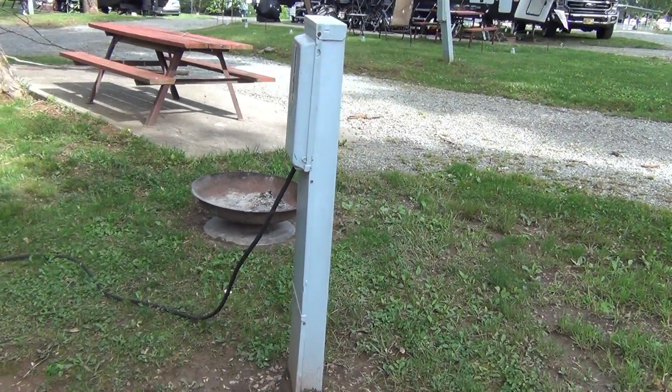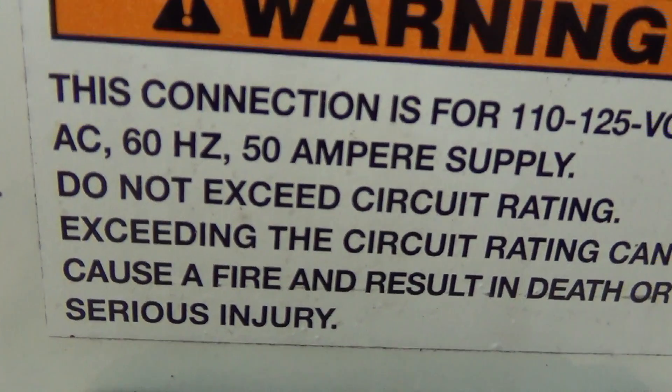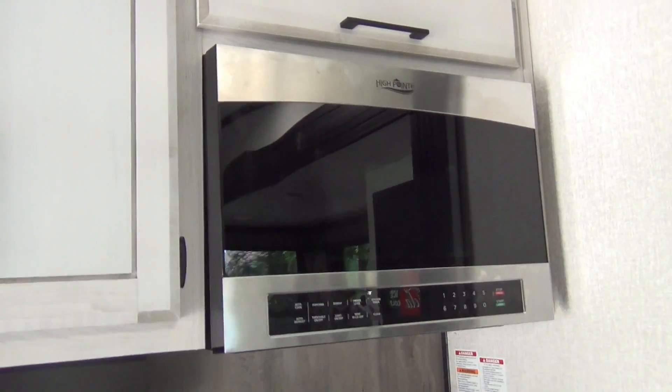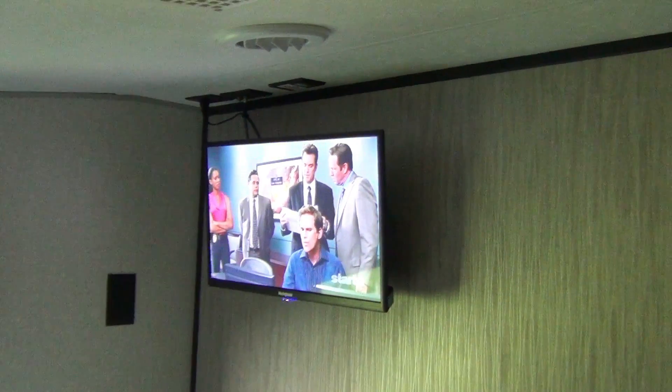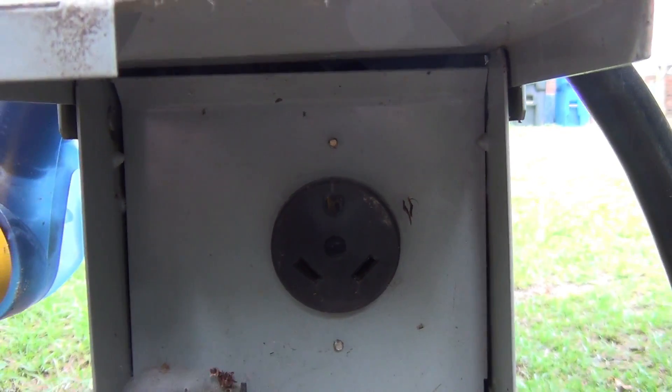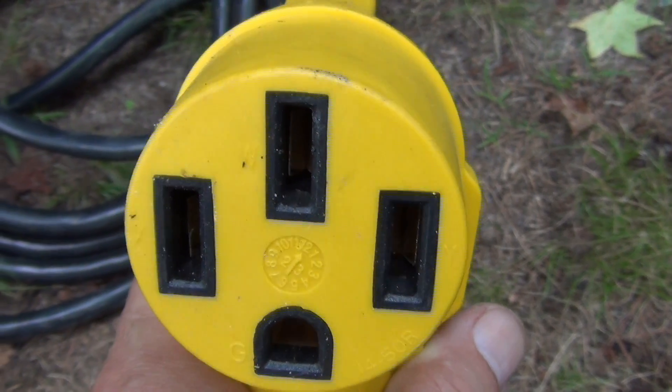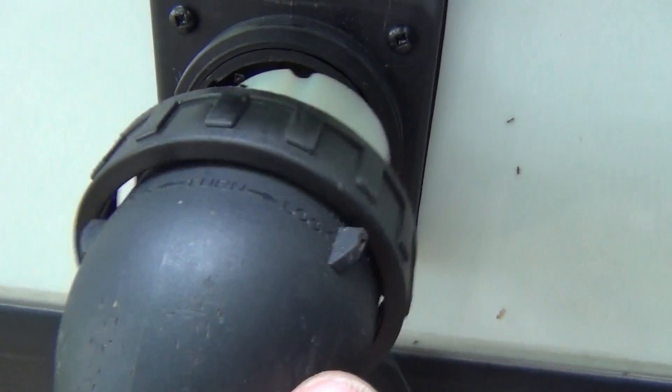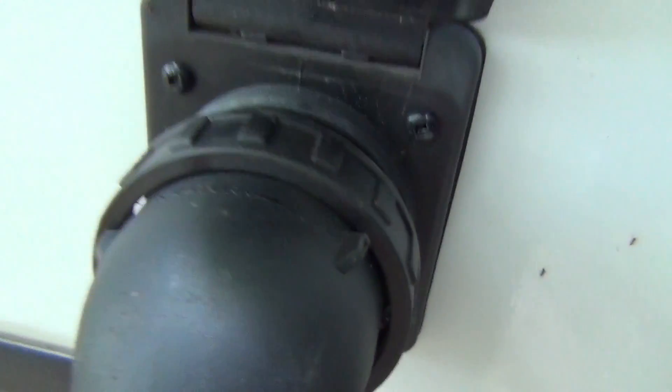You might ask, if 50 amps seem so much better, why don't they just make all RVs 50 amps? Well, there are two main reasons, need and cost. If you don't have a lot of appliances that need a lot of power, then 50 amps would be unnecessary. 30 amps should be plenty of power for an average camper. 50 amp systems are also more expensive to manufacture, which would be passed on to the consumer and make medium to smaller campers even more expensive.